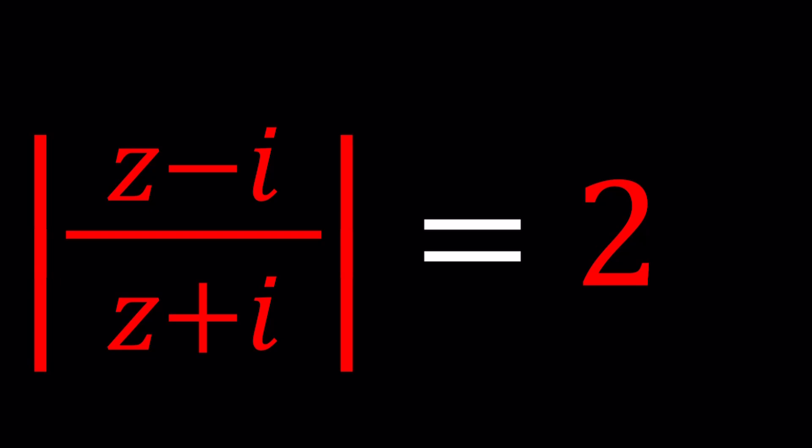So we have a very special equation, the absolute value of Z minus I over Z plus I is equal to 2 and we're going to find the Z values that satisfy this equation. Of course we can also generalize this method, we can talk about that as well because this is a very special case scenario.